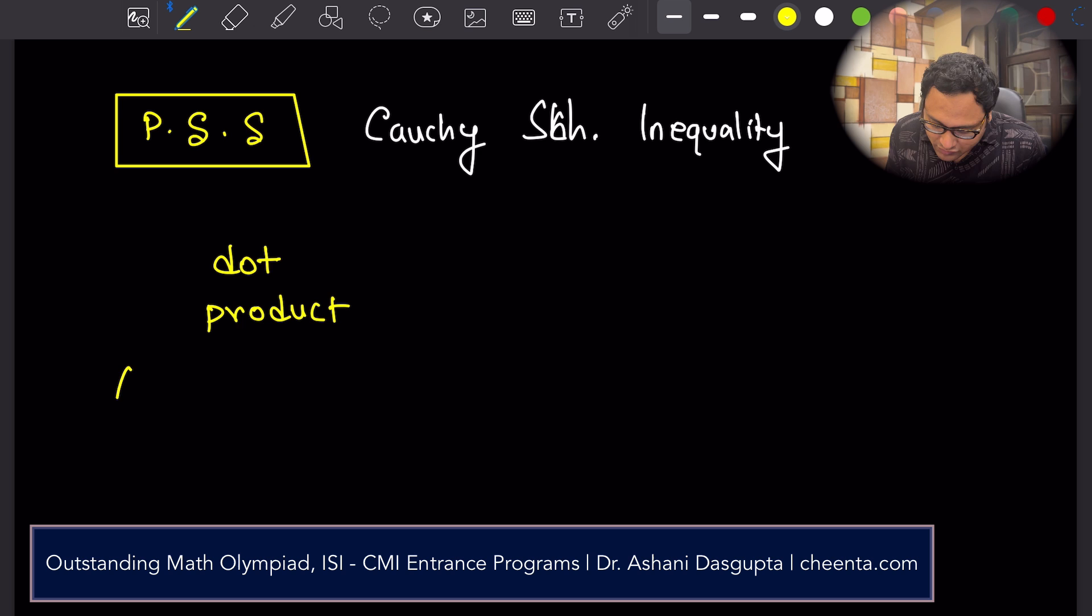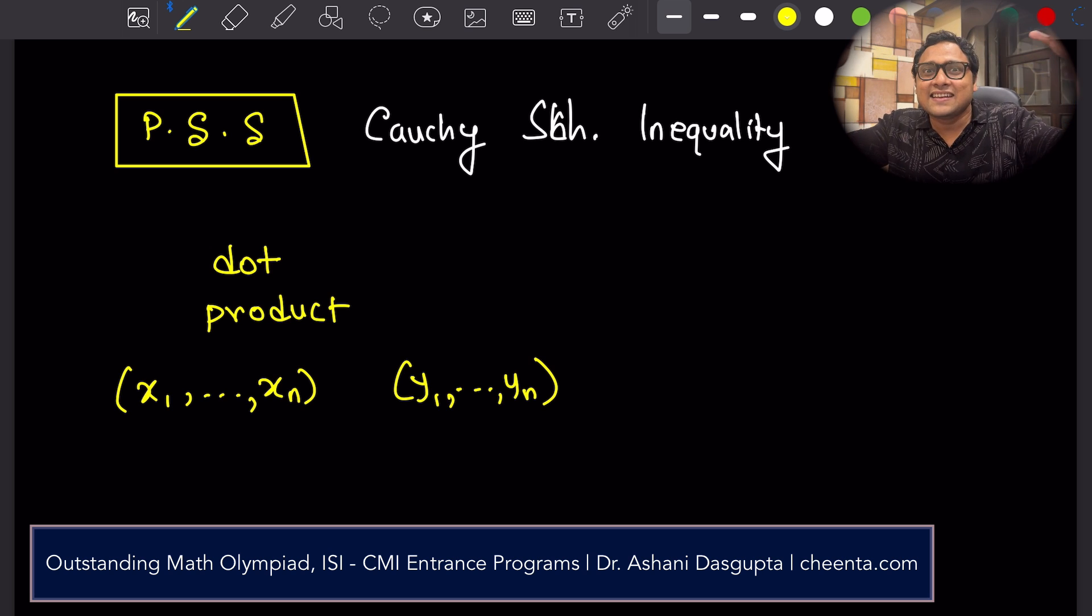So we have, let's say we have two coordinates. Points, x1 to xn is one point and y1 to yn is another point in the n-dimensional space.